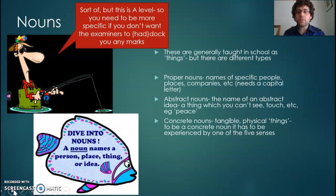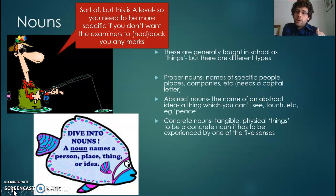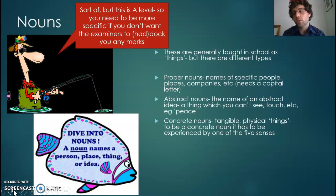There are really three types of noun. There's a proper noun — those are the ones with capital letters. It's a person, it's a company, it's a country. If you put a capital letter on it, it's a proper noun.